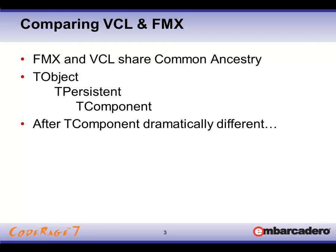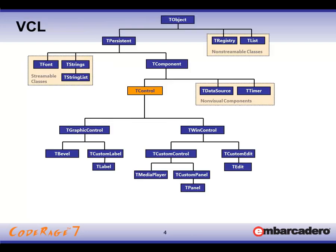Fortunately, even though there are a lot of new capabilities in FireMonkey, it leverages a lot of the same base functionality from the VCL. That's clearly evident when you look at the base ancestor classes of TObject, TPersistent, and TComponent — they're the same ones. However, it gets interesting when you drop below that. In the VCL class hierarchy, TControl drives the visual side. Graphic controls have no window handle, no container, no keyboard focus, while TWinControl and custom controls are all controls with no real separation other than implementation details.